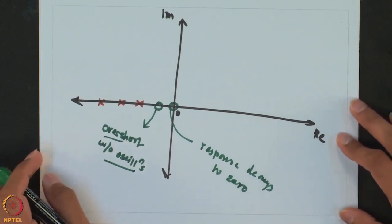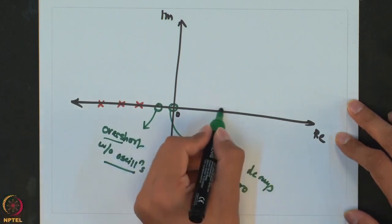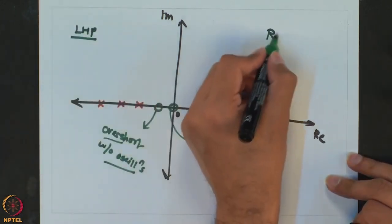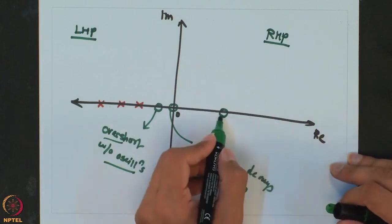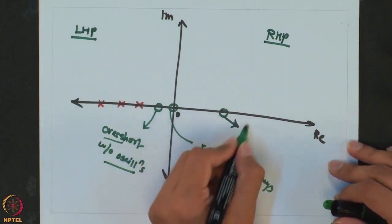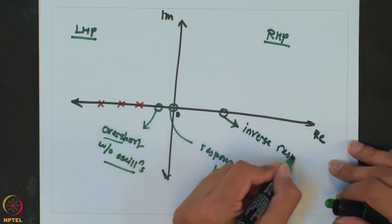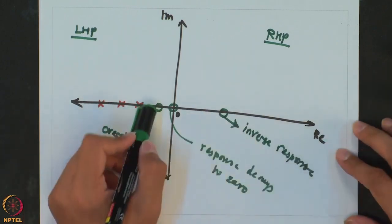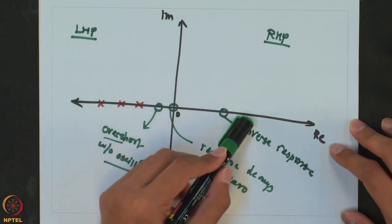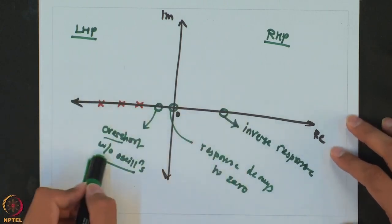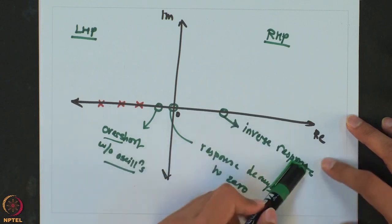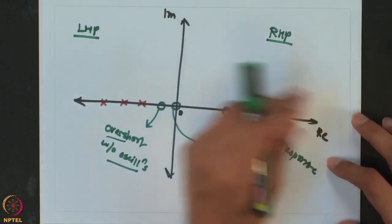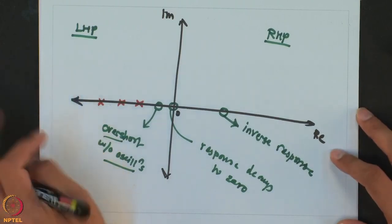The other interesting case is if the zero is on the right half plane. A real zero on the right half plane gives an inverse response. So by plotting the zeros onto the complex plane as well, you can predict whether there will be overshoot without oscillation or an inverse response — on top of the response predicted by the poles — and the combined response is a combination of these two factors.